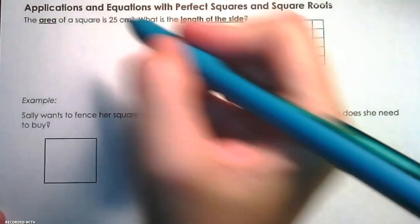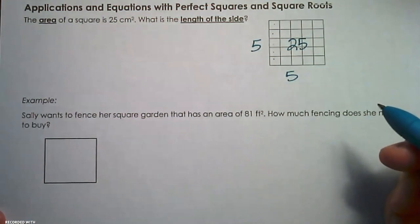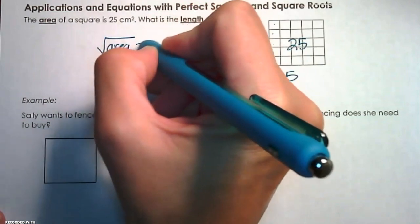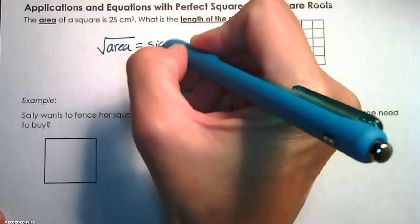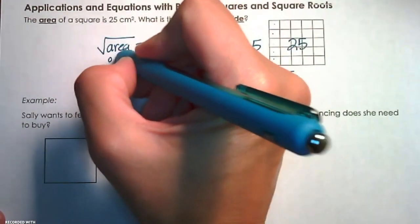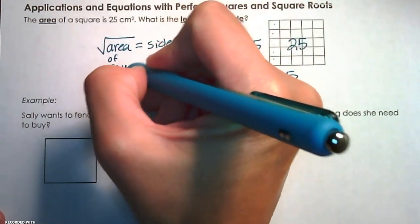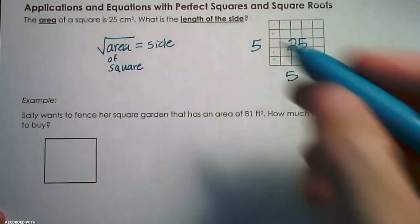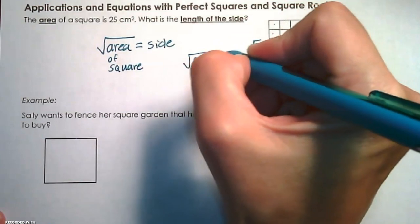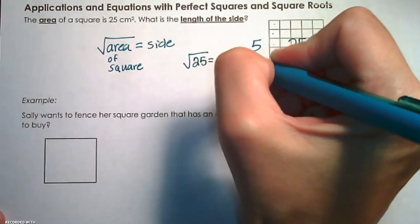So our general rule is if we know the area of a square, we take the square root of that area, and we are going to get the side length. And this is only specific to squares. This wouldn't apply to other shapes. So if I take the square root of that 25, I'm going to get the side length of 5 centimeters.